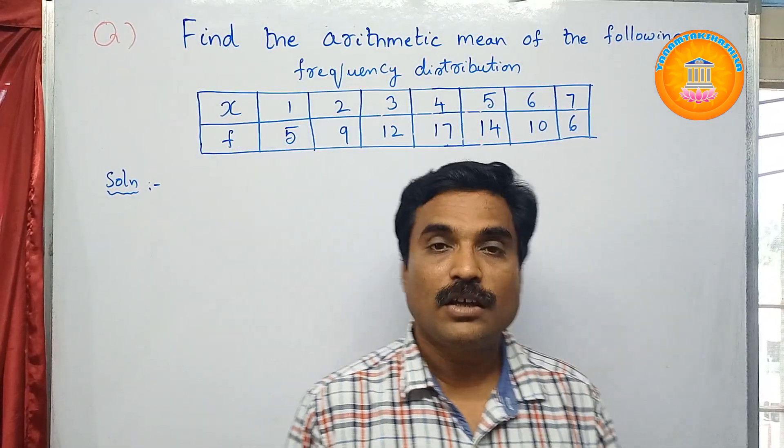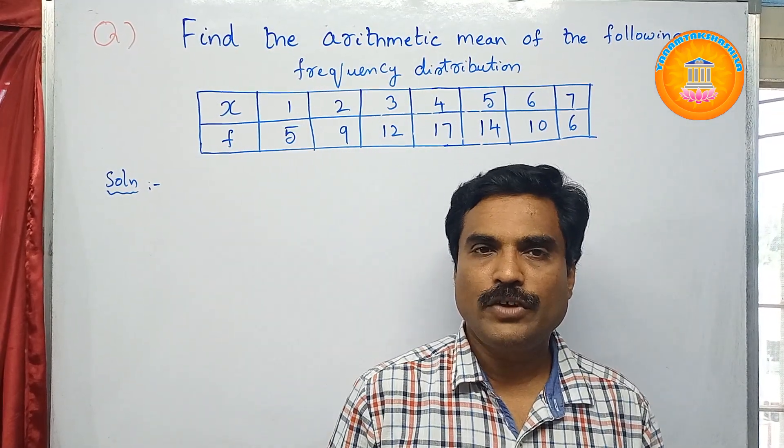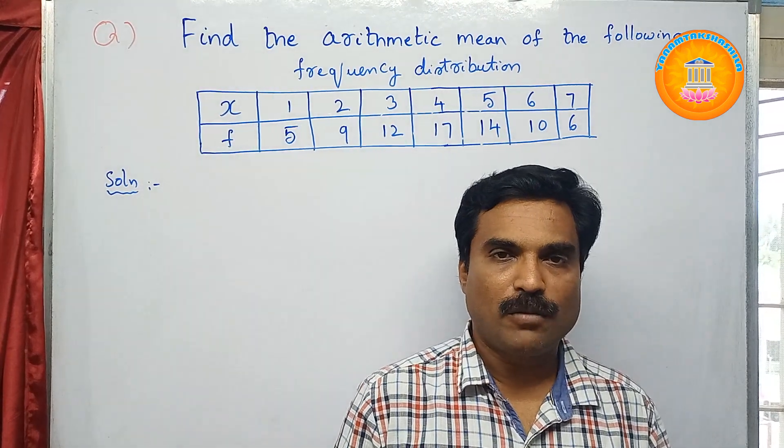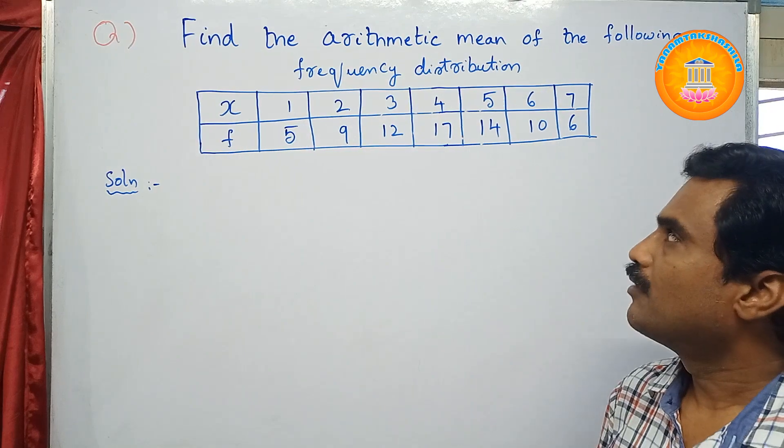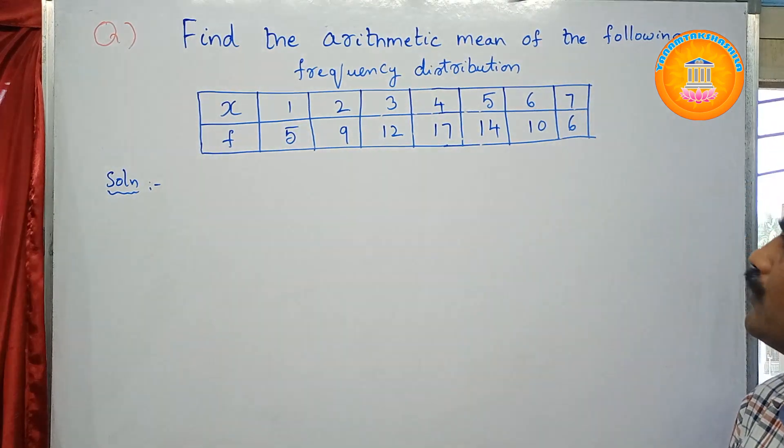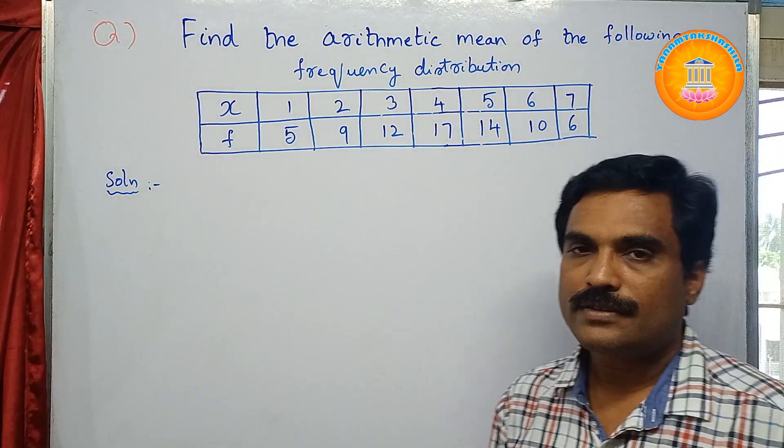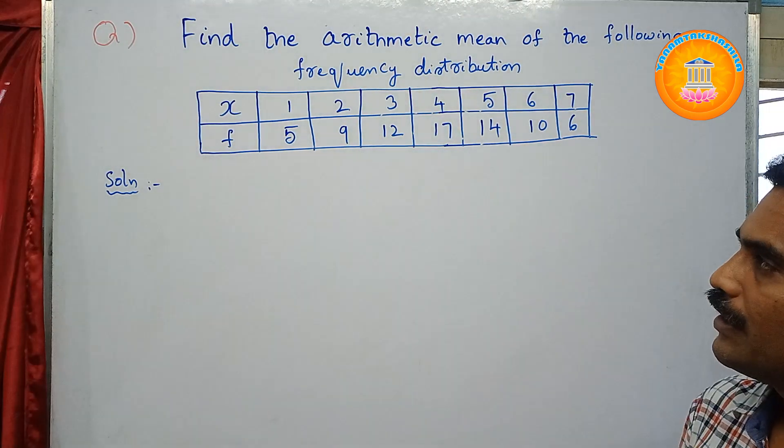Hi, welcome to my channel Yamantakshila. In this new video, I am going to solve a mathematical problem under the topic statistics. So the problem is: find the arithmetic mean of the following frequency distribution. Here they have given a table of X observations and frequency values.